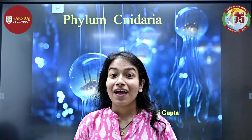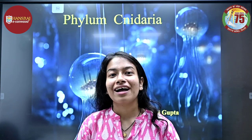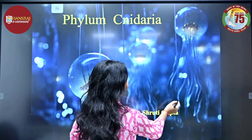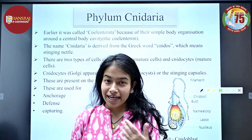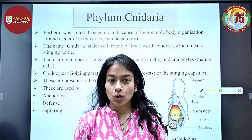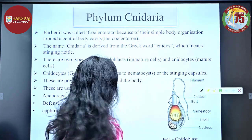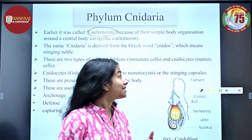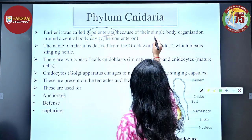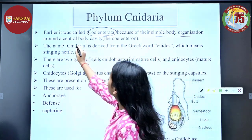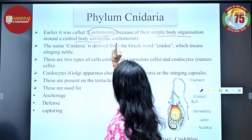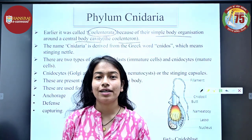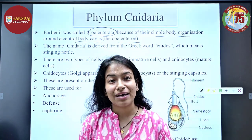Today we will be discussing about the topic Phylum Cnidaria. Earlier, Phylum Cnidaria was called Phylum Coelenterata because of their simple body organization around the central body cavity which is called coelenteron. But now it is referred to as Phylum Cnidaria.